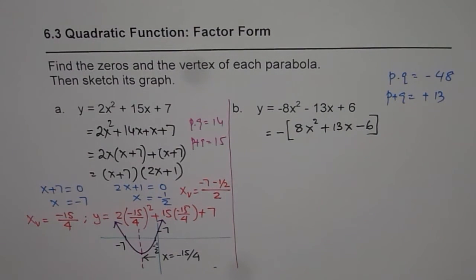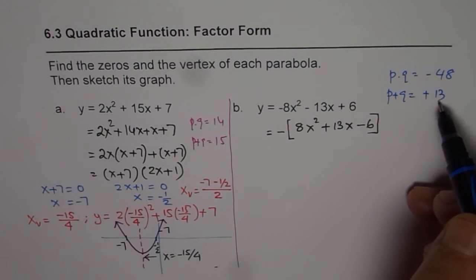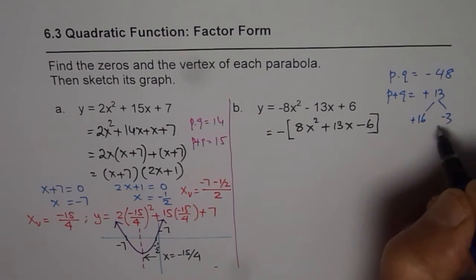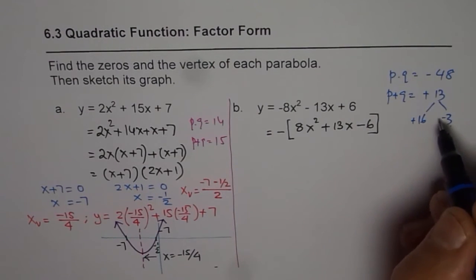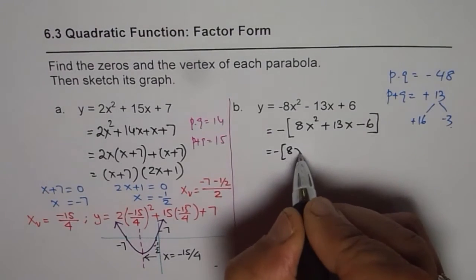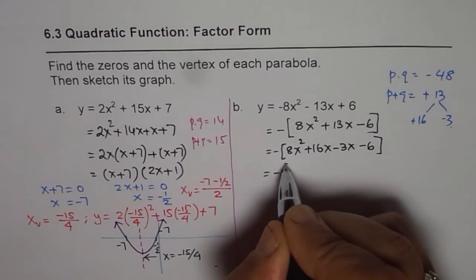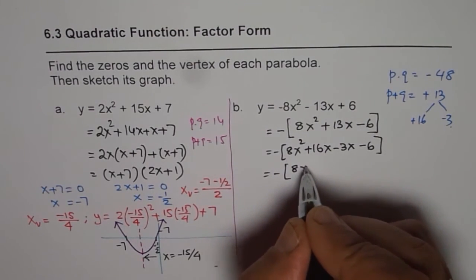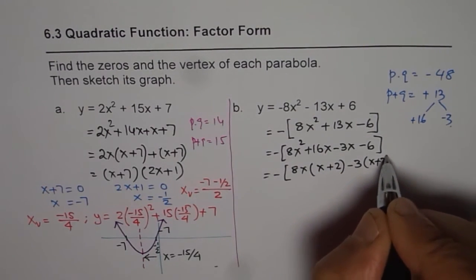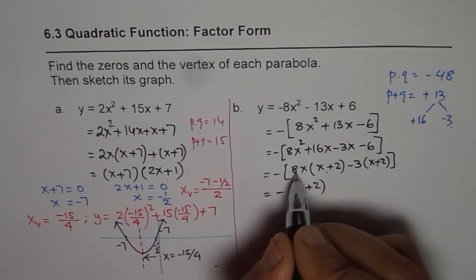Trying some factor pairs of 48: 16 times 3 works — with 16 positive and 3 negative, their product is -48 and their sum is +13. So we rewrite 13x as +16x - 3x, giving: -[8x squared + 16x - 3x - 6]. Factoring 8x from the first two terms gives x plus 2, and factoring -3 from the last two terms also gives x plus 2, confirming the factoring is correct.